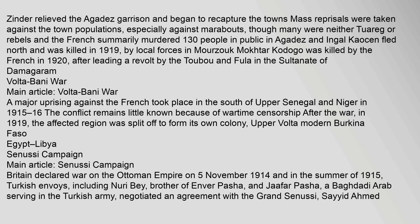Volta-Bani War: A major uprising against the French took place in the south of Upper Senegal and Niger in 1915–16. The conflict remains little known because of wartime censorship. After the war, in 1919, the affected region was split off to form its own colony, Upper Volta, modern Burkina Faso.